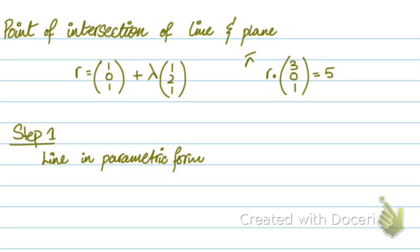So we have a line equation here, r equals 101, a fixed point, plus lambda times 1, 1, 1, that's a direction vector. And we have a vector equation of the plane, r dot 301, where 301 is the normal of the plane, equals to 5.